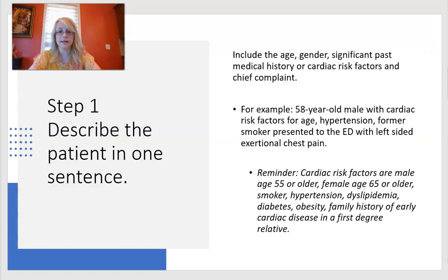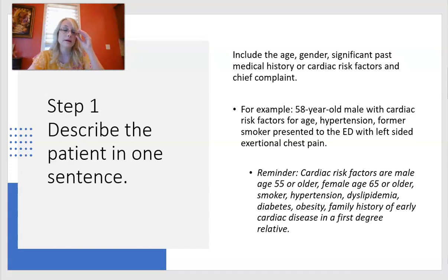Step one: describe the patient in one sentence. Your attending and preceptor don't have a lot of time for long discussions — you need to make your point and your case quickly. I like to sum it up in one sentence that really tells my attending what's going on. You'll include the age, gender, significant past medical history or cardiac risk factors, and the chief complaint. Throughout this presentation I'll use a simple, easy-to-follow chest pain case to get us started with this five-step format.